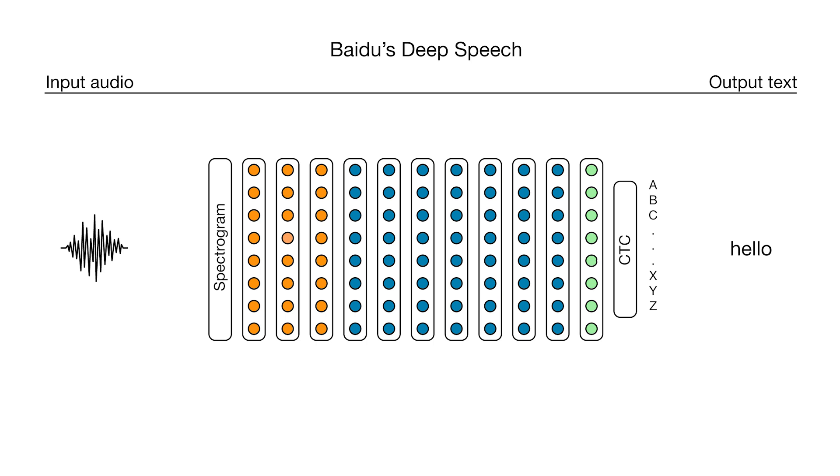In fact, the biggest change we had to make for our Deep Speech system to work in Mandarin was increasing the size of our output layer to accommodate all the Chinese characters we used, which was around 6,000 of the most common characters.